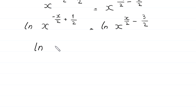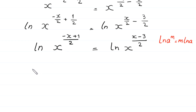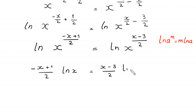Writing with common denominator 2, the left exponent becomes negative x plus 1 over 2, and the right exponent becomes x minus 3 over 2. By the natural log property ln of a to the power m equals m times ln of a, this becomes: negative x plus 1 over 2 times ln of x equals x minus 3 over 2 times ln of x.